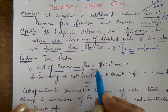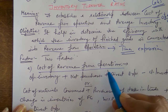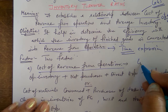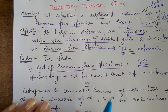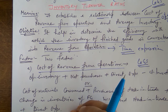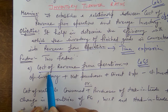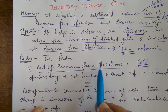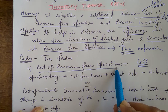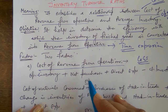The first factor is cost of revenue from operations, also written as cost of goods sold (COGS). The formula for COGS, as done in Class 11, is: opening stock plus net purchases plus direct expenses minus closing stock. There are different methods to calculate COGS: opening inventory plus net purchases plus direct expenses minus closing inventory.